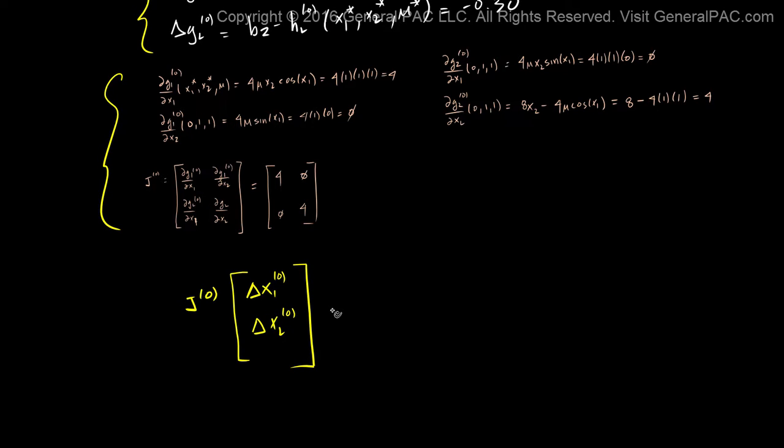We will get our mismatch. So dg1 of the 0th value and dg2 of the 0th value. This is essentially the meat of the Newton-Raphson method. Now what we have is this.